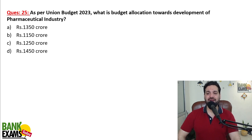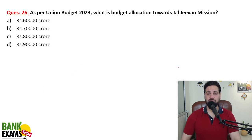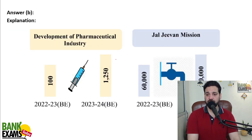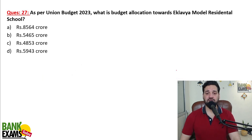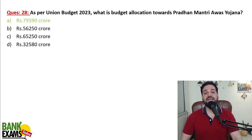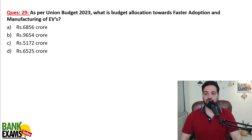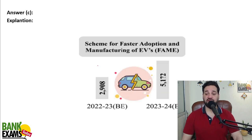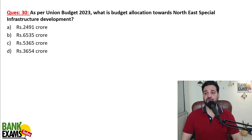As per Union Budget 2023: budget allocation towards development of pharmaceutical industries is 1,250 crore. Jal Jeevan Mission is 70,000 crore. Budget allocation towards Eklavya Model Residential Schools is 5,943 crore. Pradhan Mantri Awas Yojana allocation is 79,590 crore. The FAME scheme for EV manufacturing has been increased from 2,908 crore to 5,172 crore. Budget allocation towards North East Special Infrastructure Development is 2,491 crore.